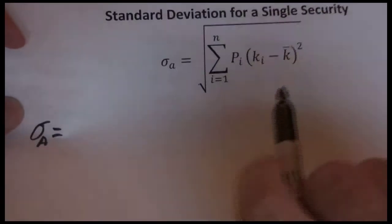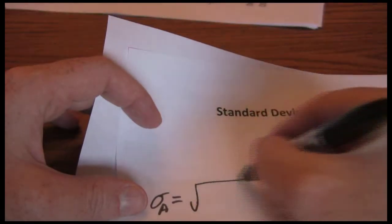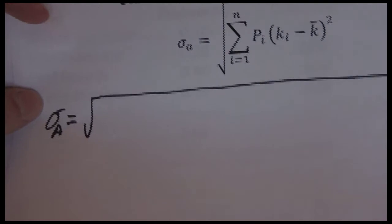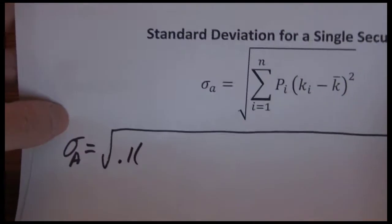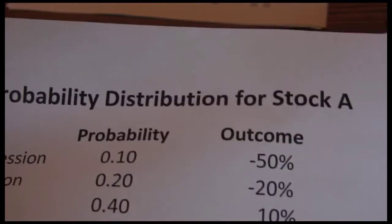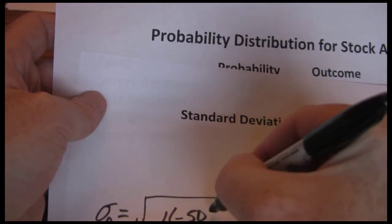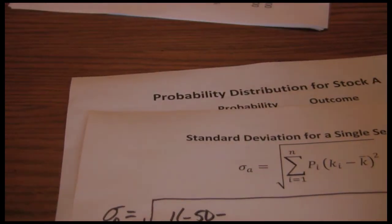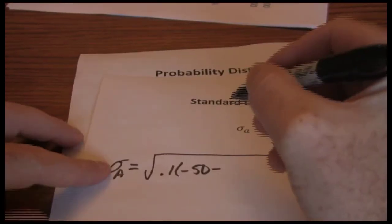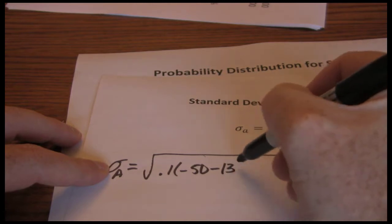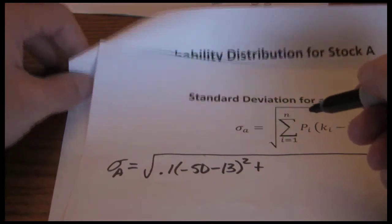So our formula says probability, actual minus expected squared, and all of that's going to be under a square root sign. So we start out with the probability .1. Actual was the negative fifty percent, and the expected return we calculated earlier was thirteen percent. And that's squared.